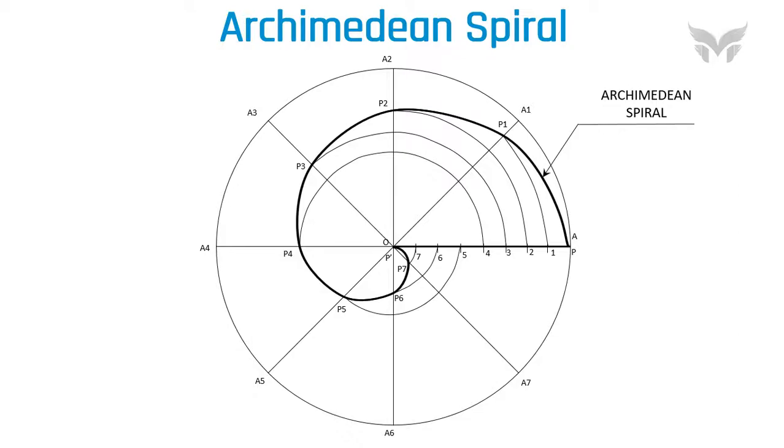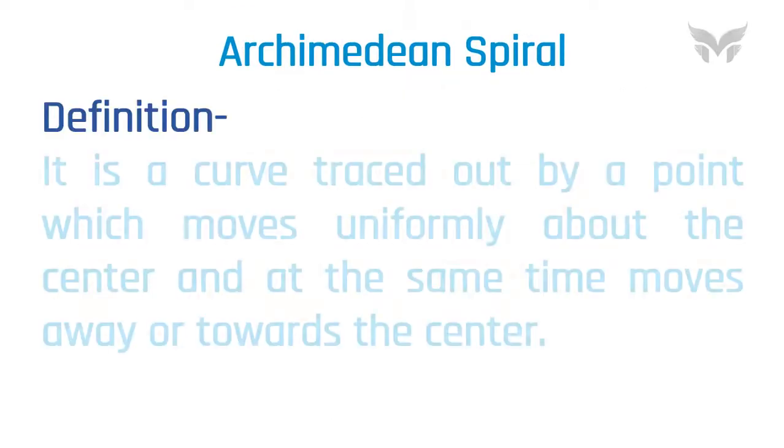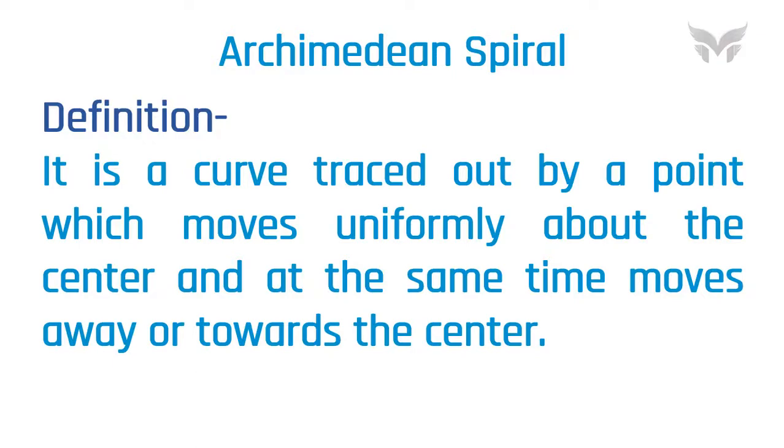Before we directly jump into the problem statement, let's have a look at the definition of a spiral. It is a curve traced out by a point which moves uniformly about the center and at the same time moves away or towards the center.